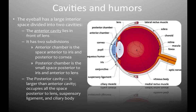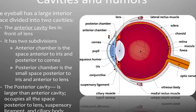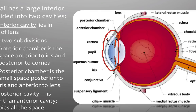The eyeball also has cavities and humors related to its anatomy. The eyeball has a large interior space with two cavities. The anterior cavity sits in front of the lens and has two subdivisions: a posterior chamber and an anterior chamber. The anterior chamber sits in front, and the posterior chamber sits behind the ciliary body and the iris. Then you have the posterior cavity, which covers all of the back space of the eye.